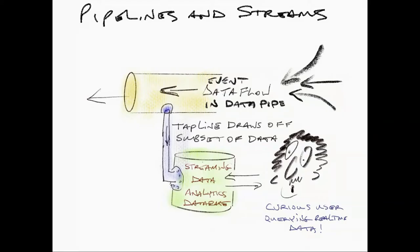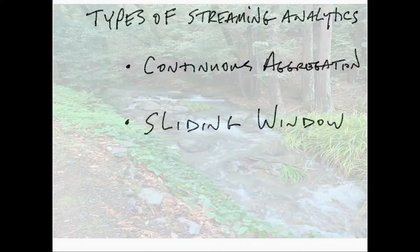Pipelines and streams. We've got that event data flow happening in our data pipe. These streaming analytics databases, the way they work is they sort of tap into that. Then the analytics happens in that separate database, getting fed the data. That database at the bottom would be like PipelineDB. It's getting data fed to it through this tap line. Our user there is looking at that data. We're going to talk about this tap line. In PipelineDB, that's referred to as a stream. Very confusing term because stream is used all over the place, but they call it a stream.